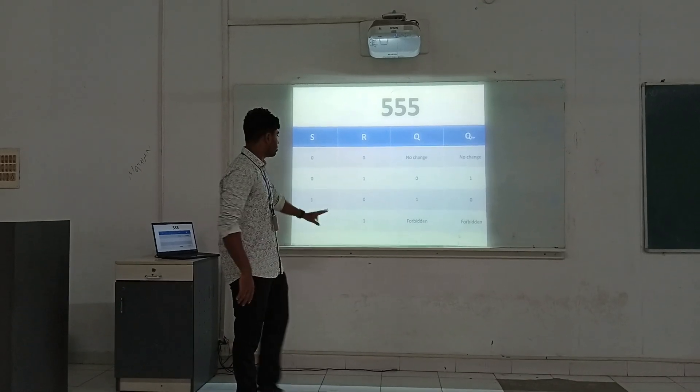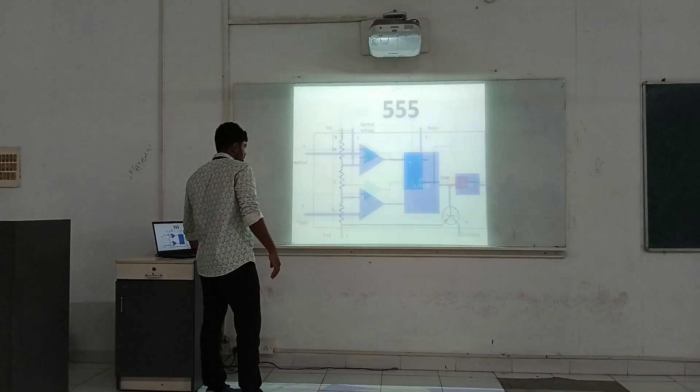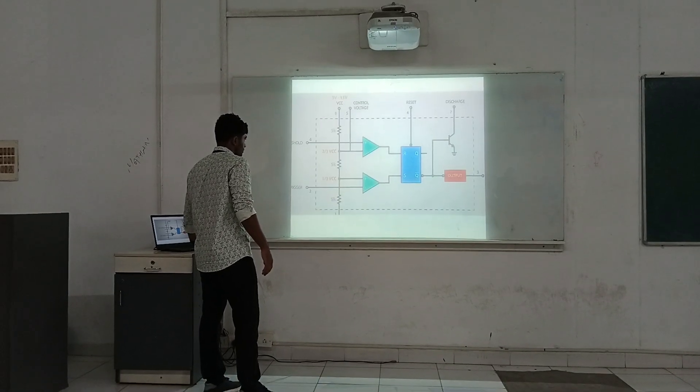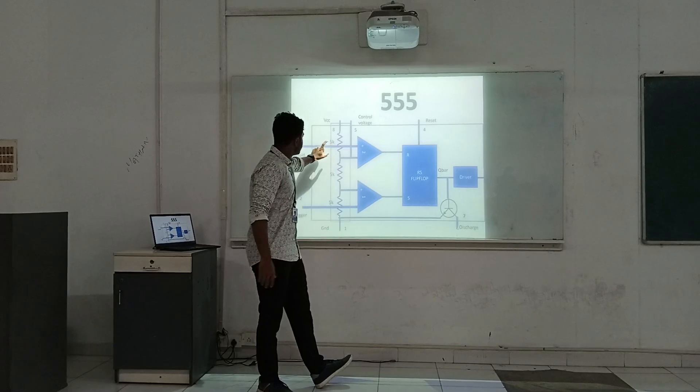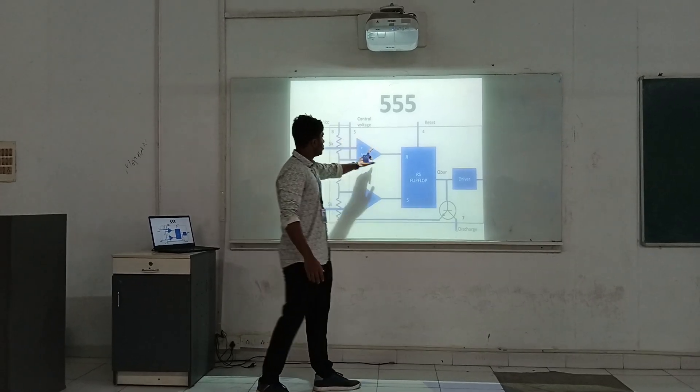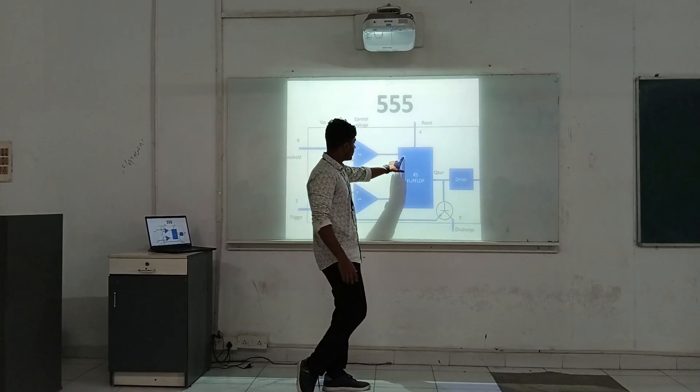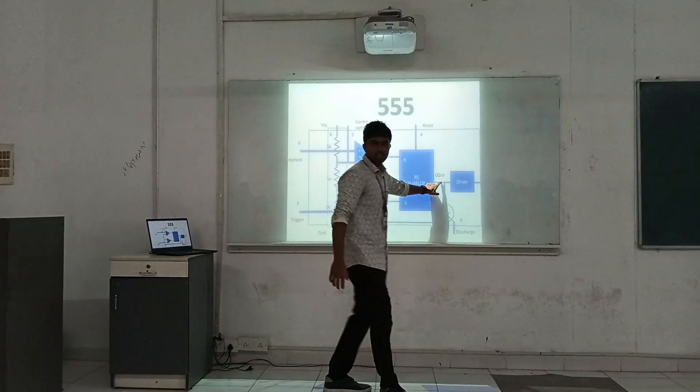The output of the SR flip-flop is taken from Q bar. When the voltage is higher at Set, then the output is 1. If the Reset terminal is 1, it will be going to the next state.